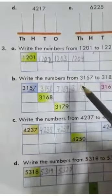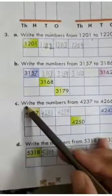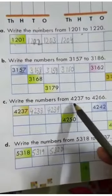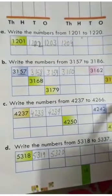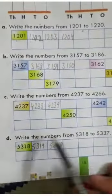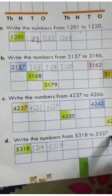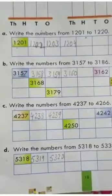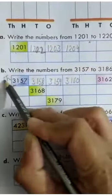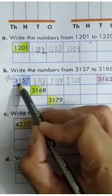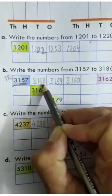In Part B you have to write counting from 3157 to 3186. In Part C, from 4237 to 4266. And in Part D, from 5318 to 5337. Keep one thing in mind: the digit under the place value 1000 will remain the same; only the last three digits at the back will increase.